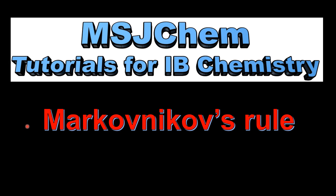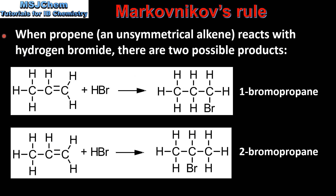This is MSJChem. In this video I'll be looking at Markovnikov's rule. When propene, which is an unsymmetrical alkene, reacts with hydrogen bromide, there are two possible products.